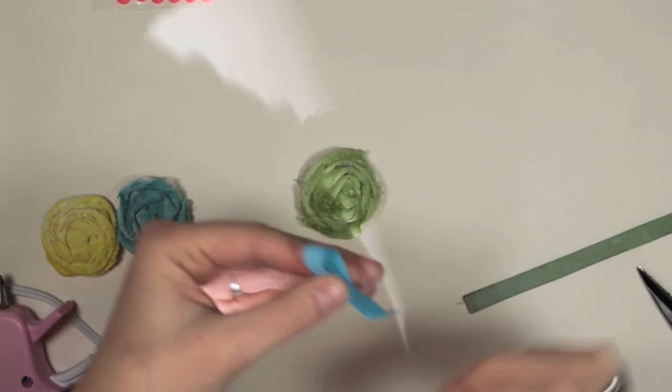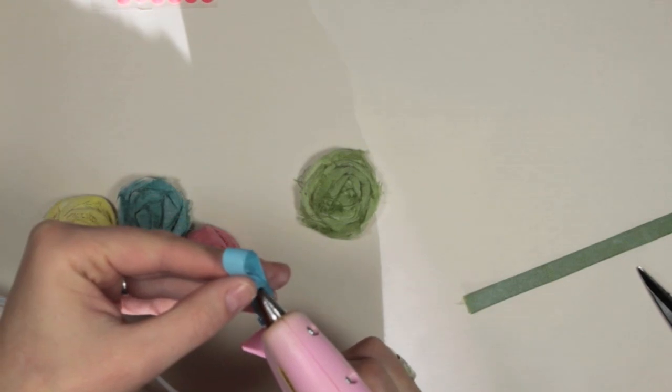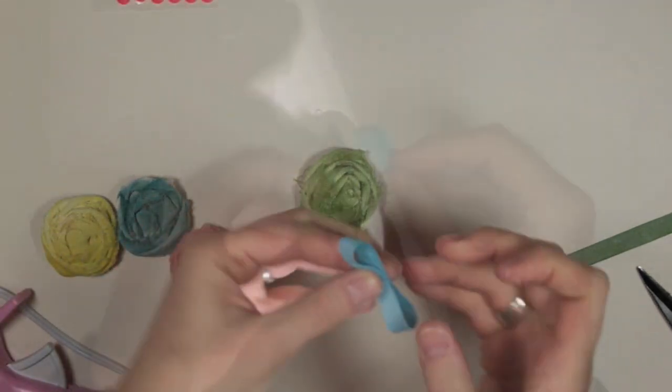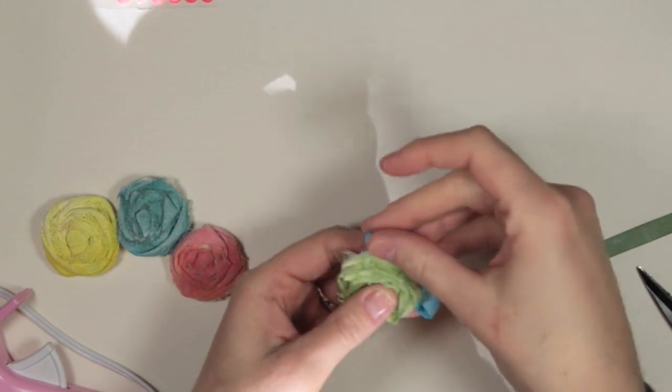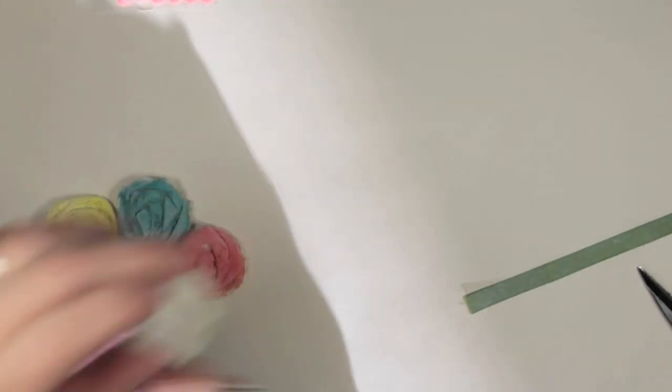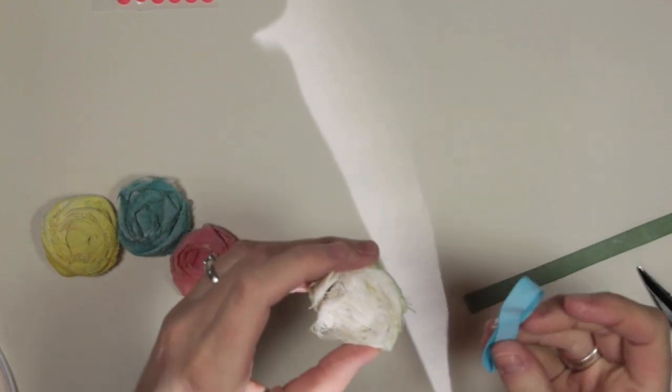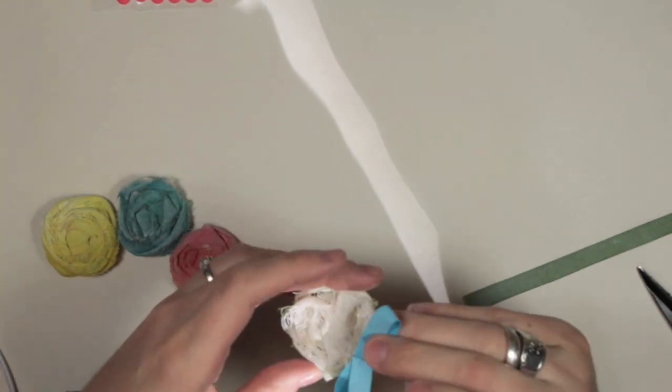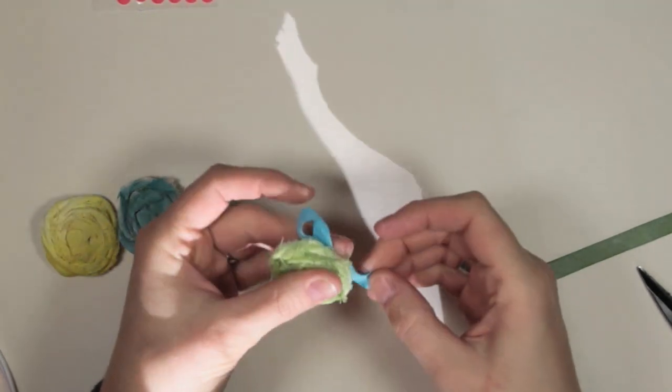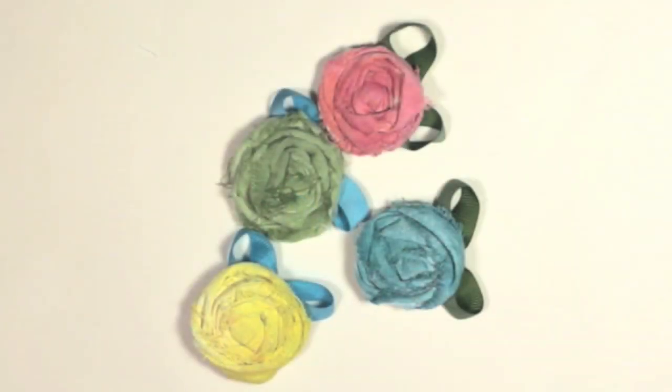I'm taking the ribbon and using my hot glue gun, creating little bows on each end. Once the bows have been created, you can take your hot glue gun and adhere the bow to the back of the flower. Here are all of my rosettes once they have the leaves on them.